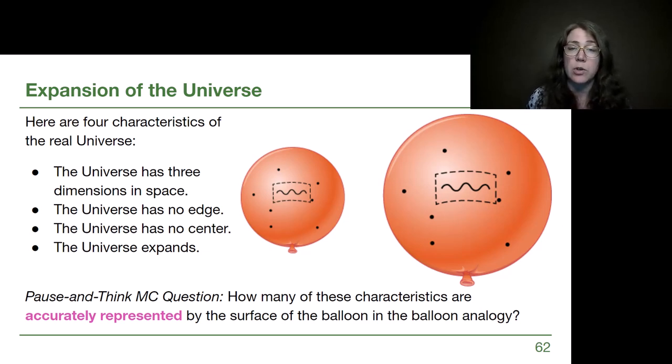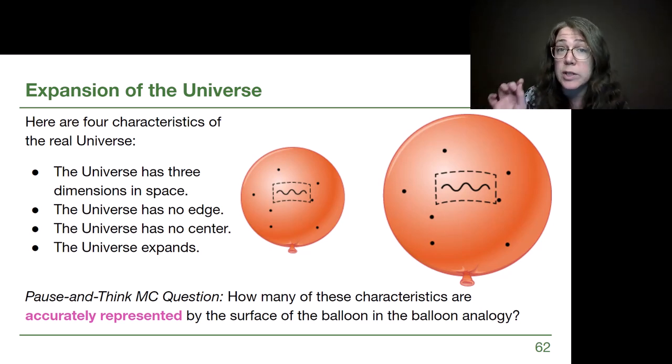The universe has no edge. This one's important for us to really start to process here. If the ant were to walk around the surface of the balloon, it will never fall off an edge of the balloon. So that's well captured by this analogy.